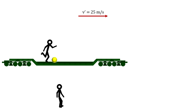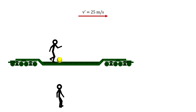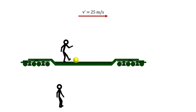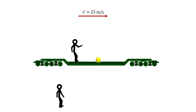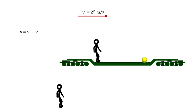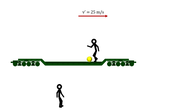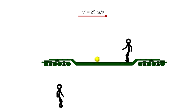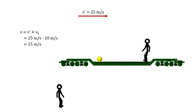Let's look at another example. Here the train is moving faster, at 25 meters per second. The person on the train kicks a ball in the direction of the train's movement and measures its speed at 10 meters per second. The person on the ground would add this to the speed of the train and gets 35 meters per second. If the person kicks the ball in the opposite direction, the person on the ground would subtract the speed of the ball from the speed of the train and see it moving at 15 meters per second.